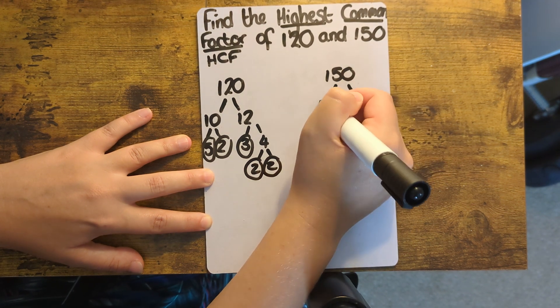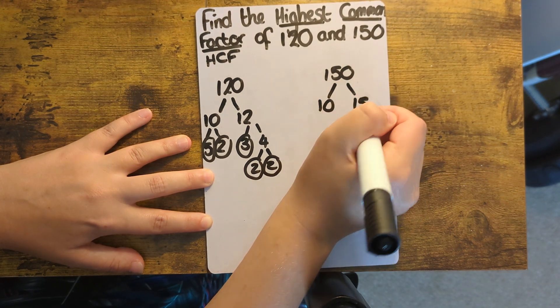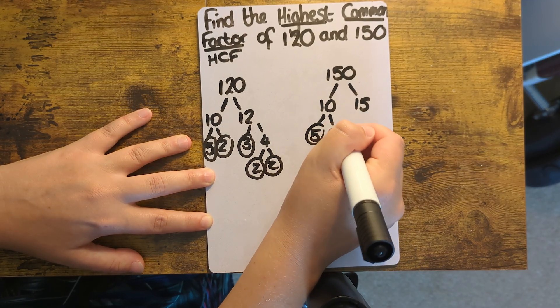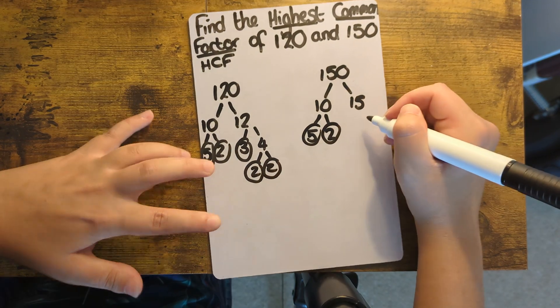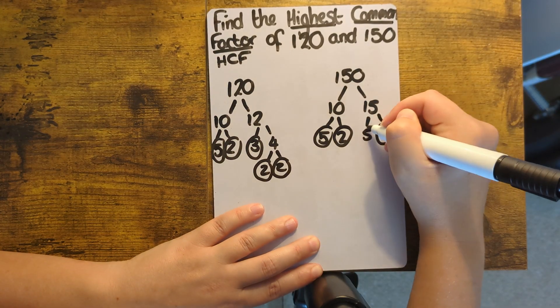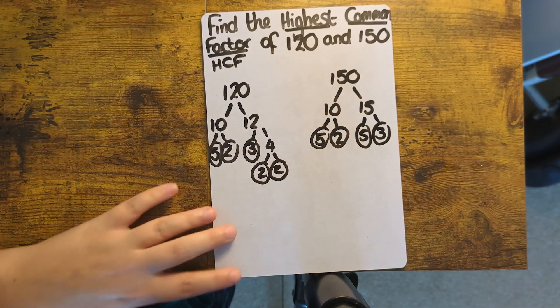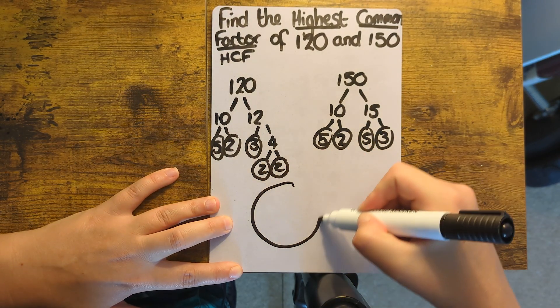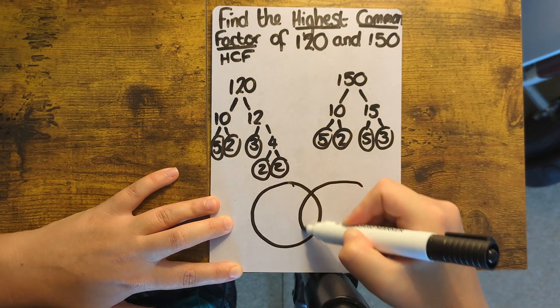Then I'm going to repeat this for 150. Once you're left with just prime numbers that have been circled, you need to draw two interlocking circles. These don't need to be perfect.